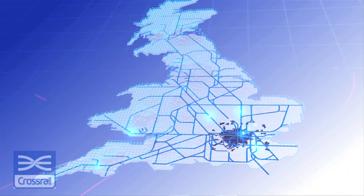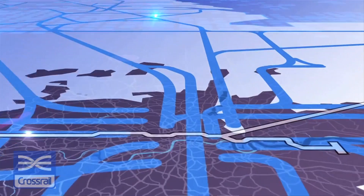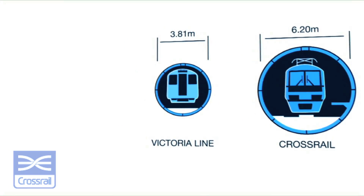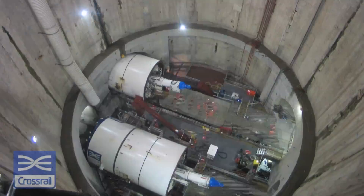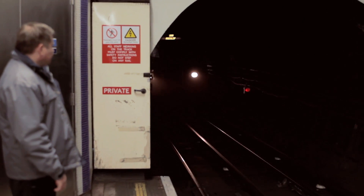The Crossrail project is the largest civil engineering project presently under construction in the whole of Europe. It's a very large underground construction project with all sorts of engineering challenges — one of the most important being how to construct large tunnels underneath urban infrastructure without causing any distress to those buildings and other tunnels.